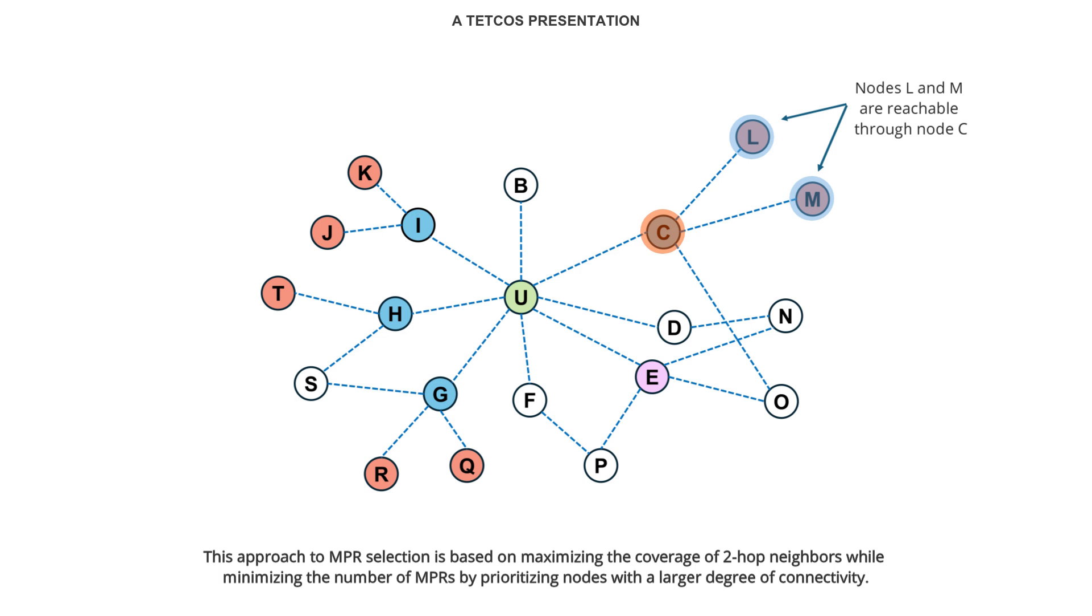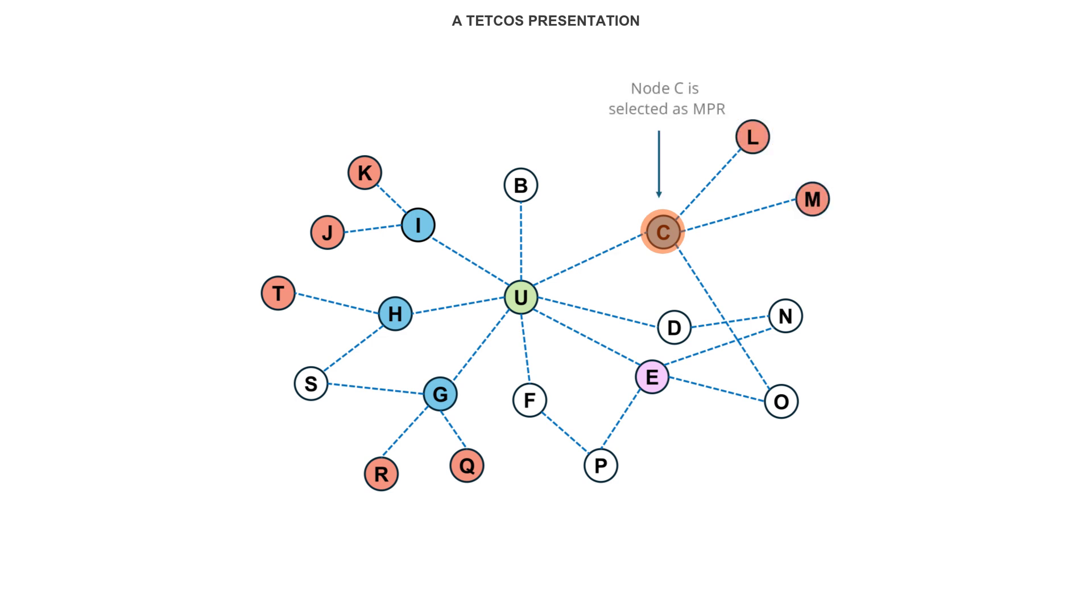Nodes L and M are reachable through node C, so node C is selected as the MPR. Node B has no connectivity to any other node. Node N can be reached through node E, which also connects to nodes O and P. Therefore, node E is selected as the MPR. Since node P can be accessed via node E, node F is not selected as an MPR. Node G connects to nodes R, Q, and S, giving it more connectivity, and is thus selected as the MPR. Node T is only reachable via node H, making node H the MPR for reaching node T. Nodes J and K are accessible through node I, so node I is selected as the MPR.